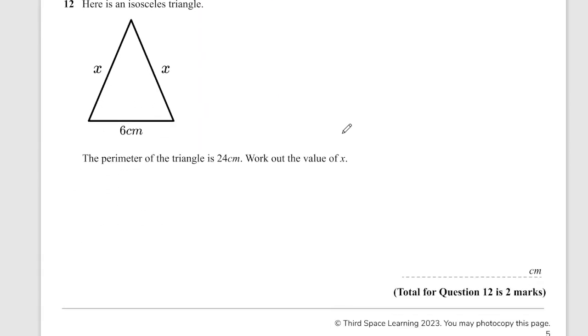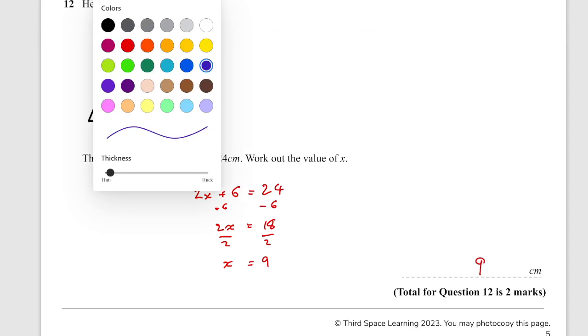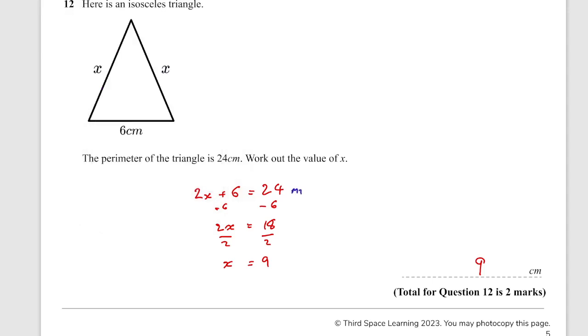Question 12. Here is an isosceles triangle. The perimeter of the triangle is 24 centimetres. Work out the value of x. The perimeter is all the way around the outside. So x plus x plus 6. So in other words, 2x. We have 2x plus 6 and that's equal to 24. My steps are keeping it balanced. I need to minus 6 from both sides of the equation. Giving me 2x is equal to 18. And then divide both sides by 2 would give me x is equal to 9. Marks for that: we have got an M1 for 24 minus 6 or setting it up as an equation. So I'll give my mark for setting it up as an equation. And then A1 for solving it.